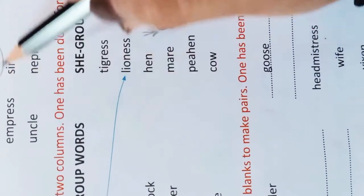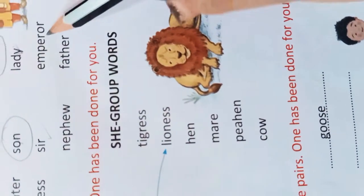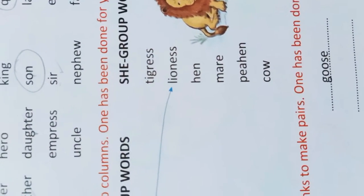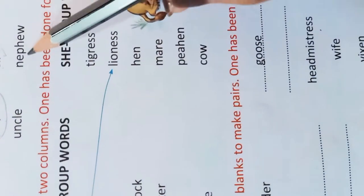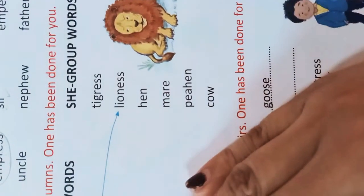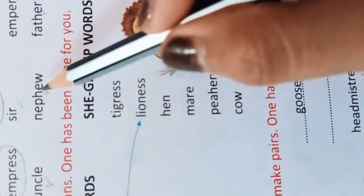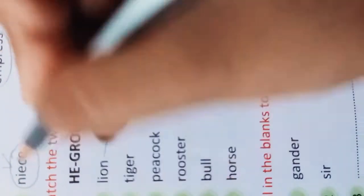In number five: man, empress, sir, emperor — man, sir, and emperor are He group words, but empress is the odd one, because empress (महारानी) belongs to the She group. In number six: niece, uncle, nephew, father — uncle, nephew, and father are He group words, but niece (भांजी या भतीजी) is the odd one, so niece is circled.